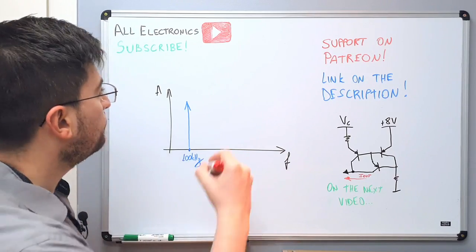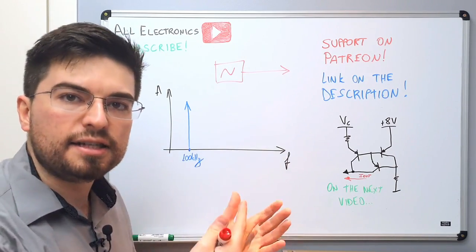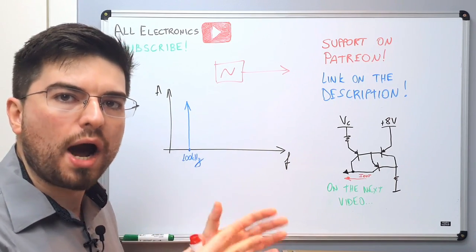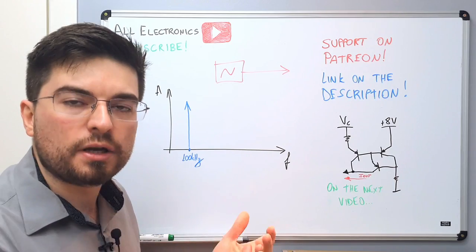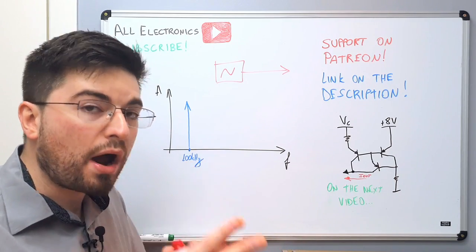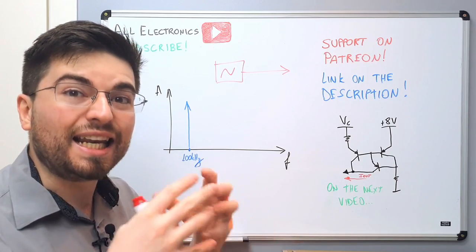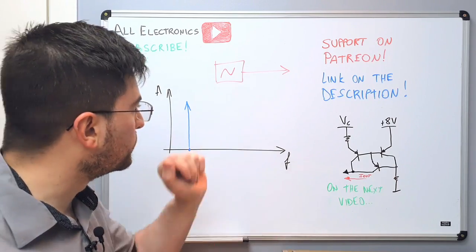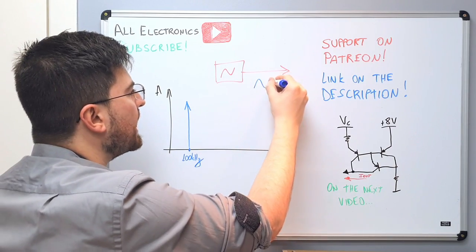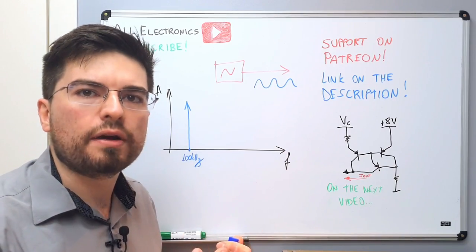We have the Wien bridge oscillator and the idea behind this circuit is to generate a 100 kilohertz tone, a 100 kilohertz signal. The main purpose of a Wien bridge oscillator is to have a very well controlled total harmonic distortion — a very clean signal at its output. So at the output of the oscillator we expect to see a sine wave, a very clean sine wave.